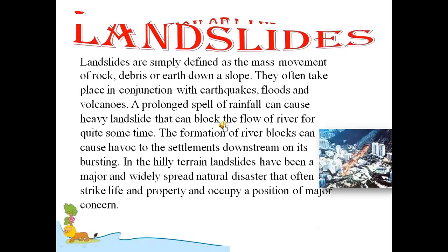What are landslides? The mass movement of rock, debris, or earth down a slope is known as a landslide. They often take place in conjunction with earthquakes, floods, and volcanoes. A prolonged spell of rainfall can cause heavy landslides that can block the flow of a river for quite some time. The formation of river blocks can cause havoc to settlements downstream upon bursting. In hilly terrain, landslides have been a major and widespread natural disaster that often strikes life and property and is a matter of major concern.